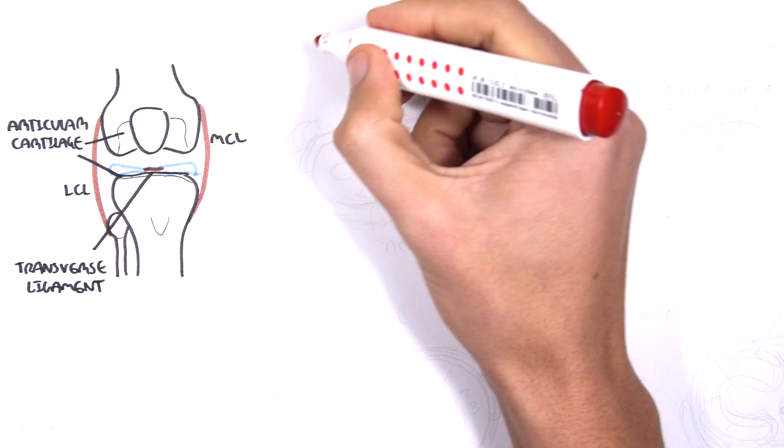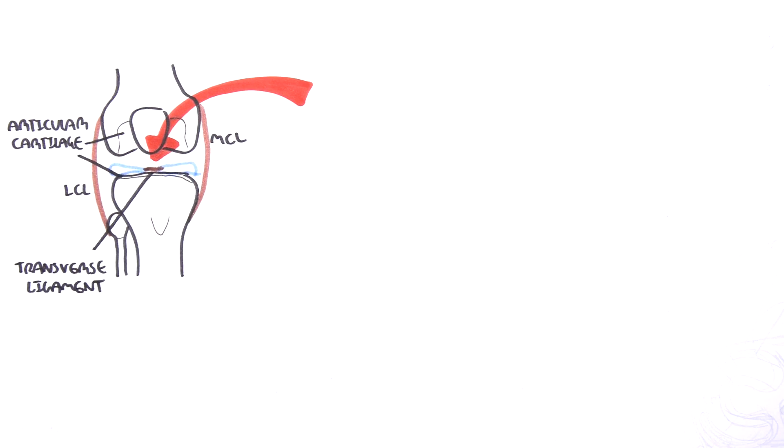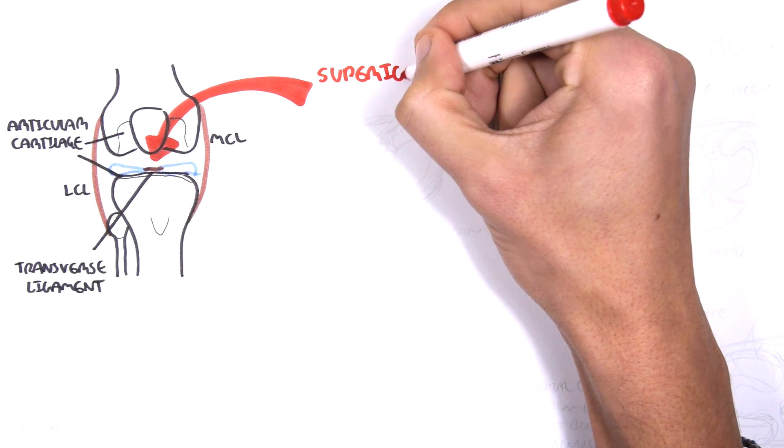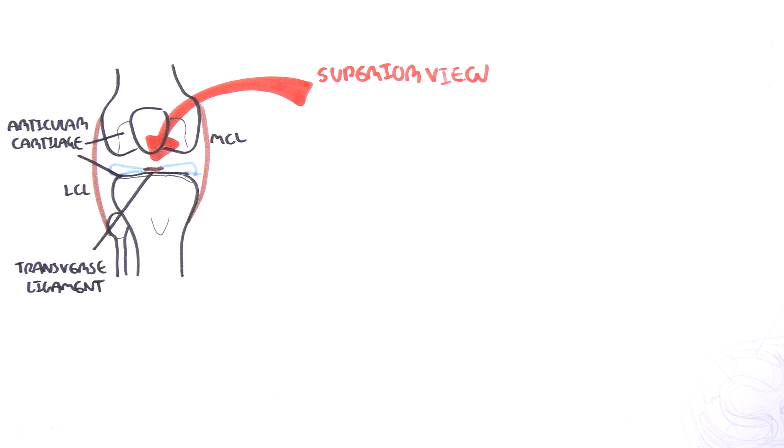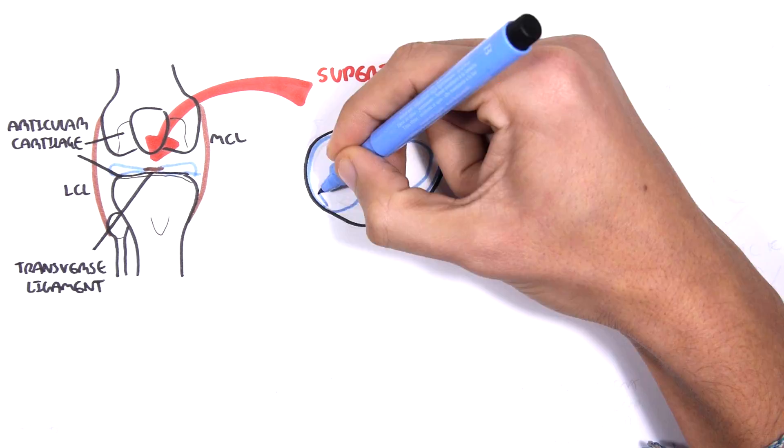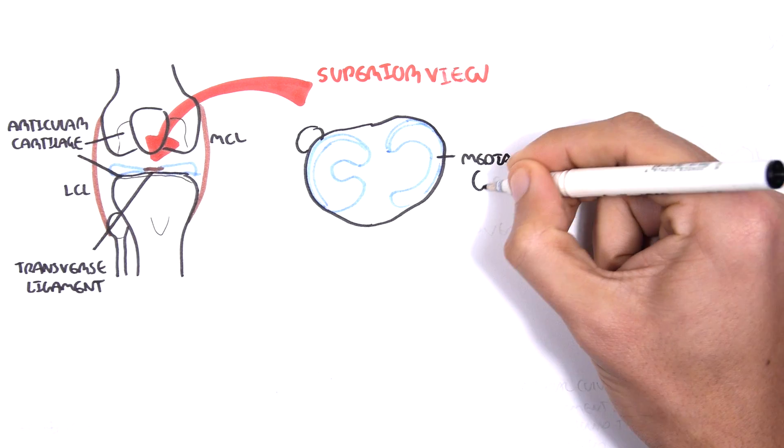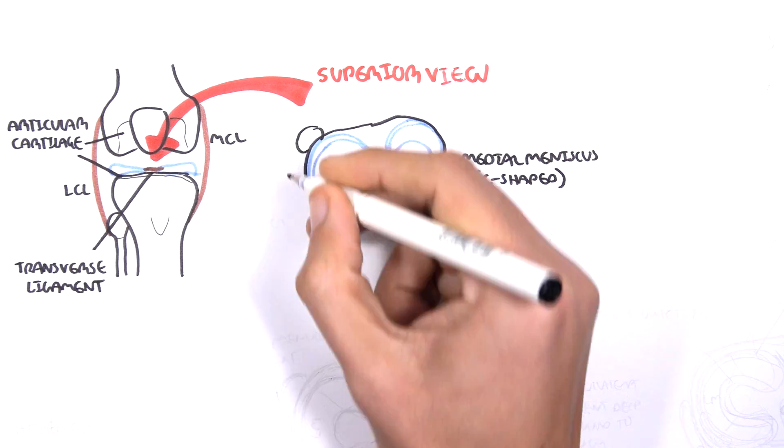Let us now focus on the menisci and look at the meniscus of the right knee joint from a superior view, so from the top. Remember that the meniscus sits on the tibial bone. To orientate ourselves, here is the medial meniscus. It is C-shaped. The lateral meniscus is more of an O-shaped.